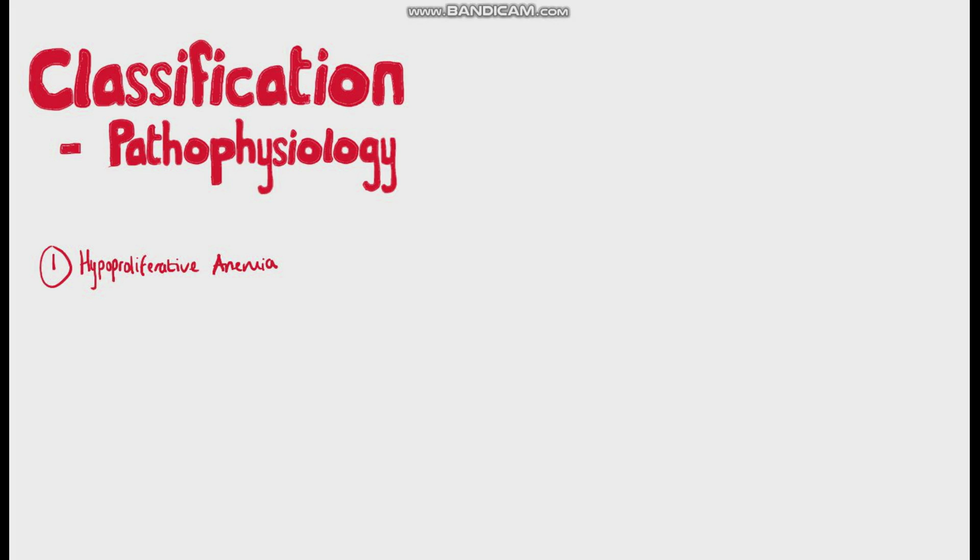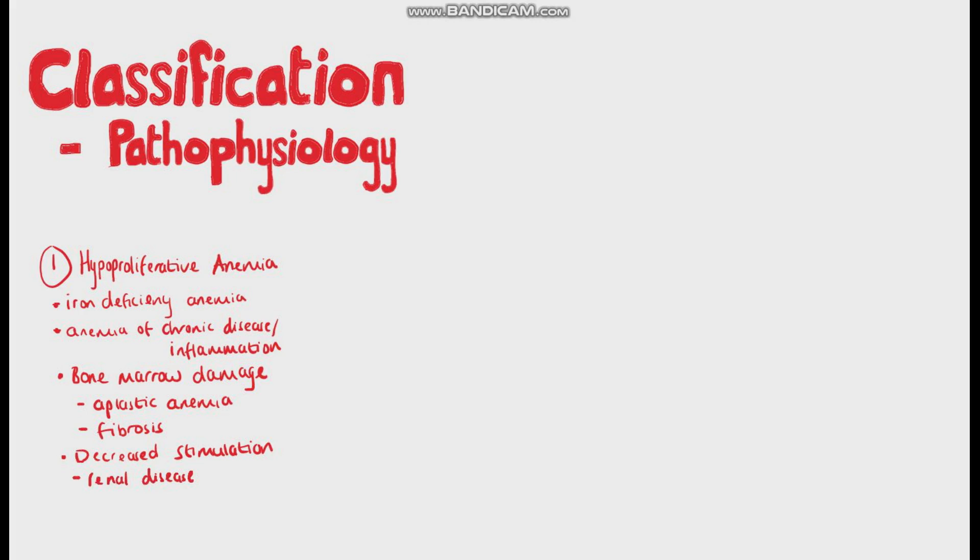Hypoproliferative anemia means that the bone marrow is not producing the red blood cells correctly, so it's a production problem. Here we find iron deficiency anemia and anemia of chronic disease, caused from bone marrow damage such as aplastic anemia, fibrosis, and causes from a decreased stimulation to produce more red blood cells, including renal disease, inflammation, and metabolic disorders.